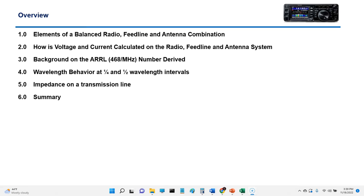We'll go over the elements of a balanced radio feed line and antenna combination, how voltage and current are calculated on the radio feed line and antenna system, a little bit of background about where the 468 comes from. I know that's a number we all use to calculate half-wave dipole antennas. And lastly, we'll talk about wavelength behavior at quarter wave and half wavelength intervals and impedance on the transmission line.